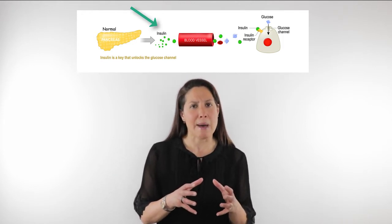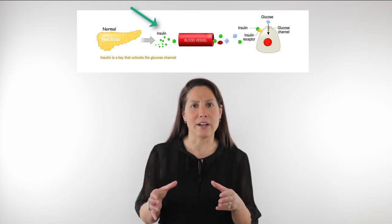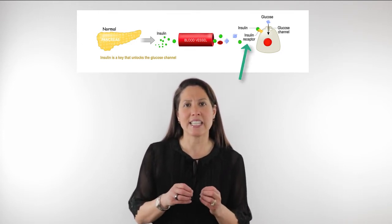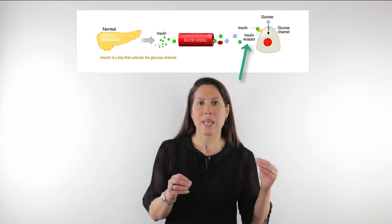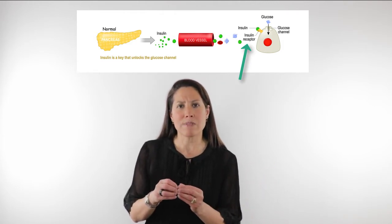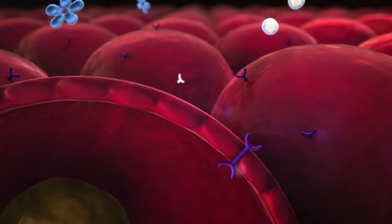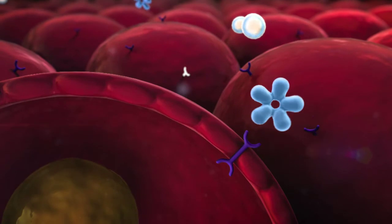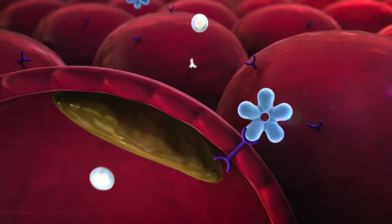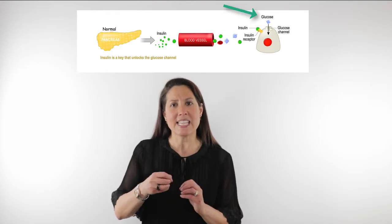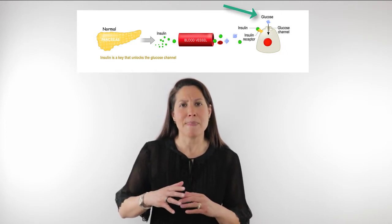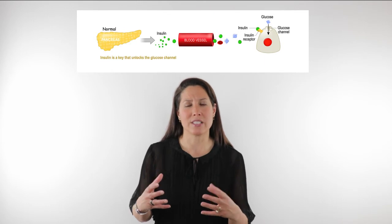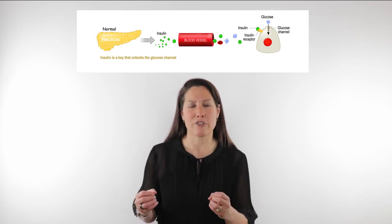What happens is that on our cells, on the cell membranes, we have insulin receptors. That insulin will go into those receptors like a lock and key. When it goes into those receptors, it allows glucose to go into the cells and make ATP energy within those cells. This is how we make cellular energy.